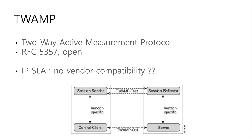For example, Cisco IP SLA has no vendor compatibility with TWAMP, so it's different. For Cisco devices, they don't support TWAMP as a client — Cisco supports only the server role, not client. But if you use IP SLA with Cisco devices, you can use the Cisco device as both server and client. That's the difference.